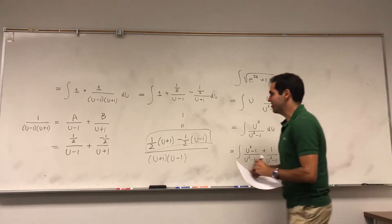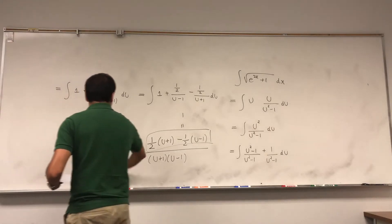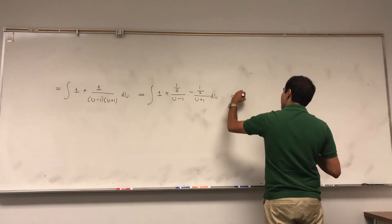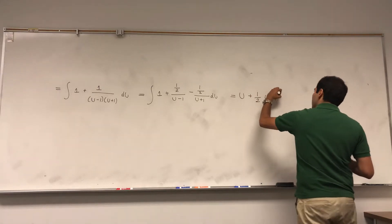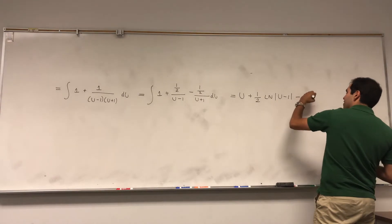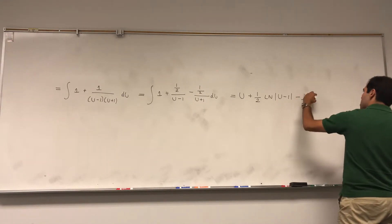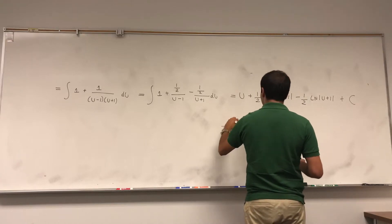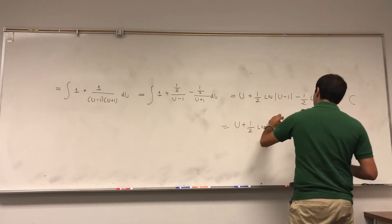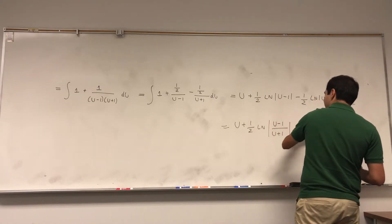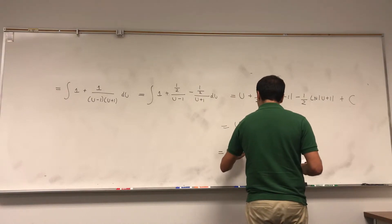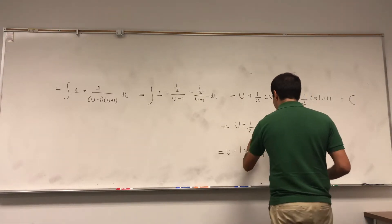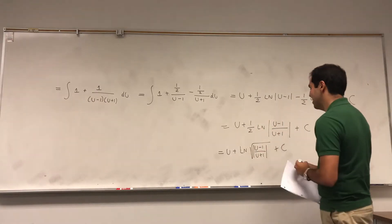And then you can just integrate this — it's not too bad. You're left with u plus one-half ln of |u minus 1| minus one-half ln of |u plus 1| plus a constant. Don't forget about this. And you can simplify this to u plus one-half ln of |u minus 1 over u plus 1| plus a constant, or even nicer: u plus ln of square root of |u minus 1 over u plus 1| plus a constant. Now let's remember what u was.